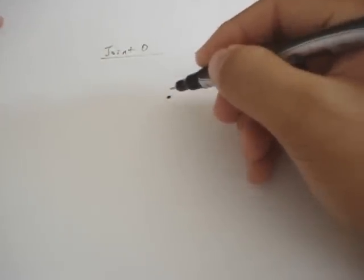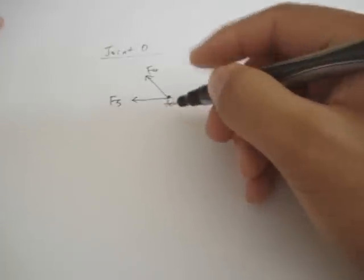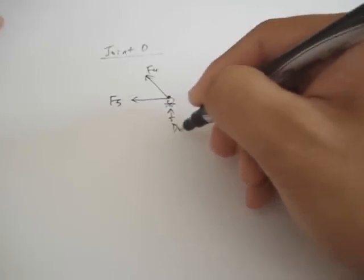So, let's do that also. Let's draw joint D. At D, you have F4 coming up. F5 going to left. And then you also have the roller support of DY going up.